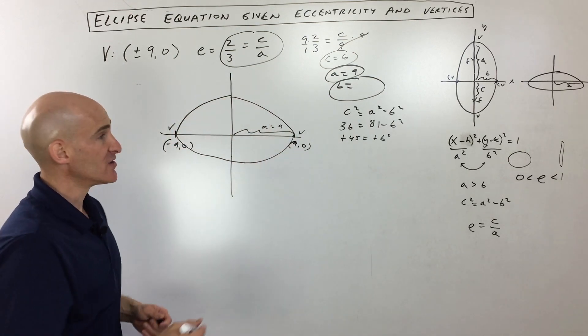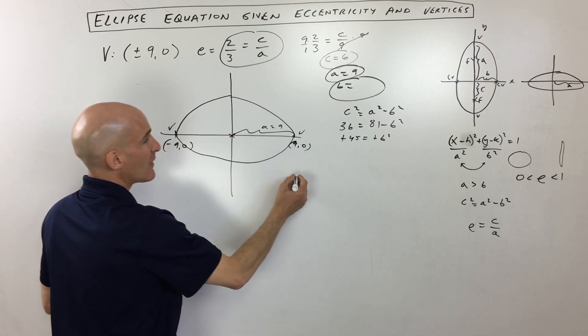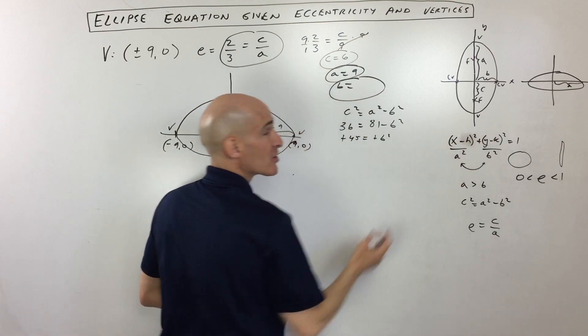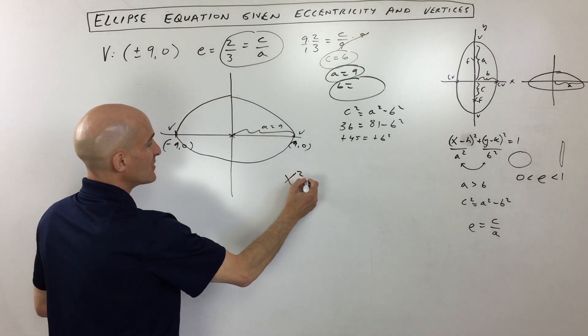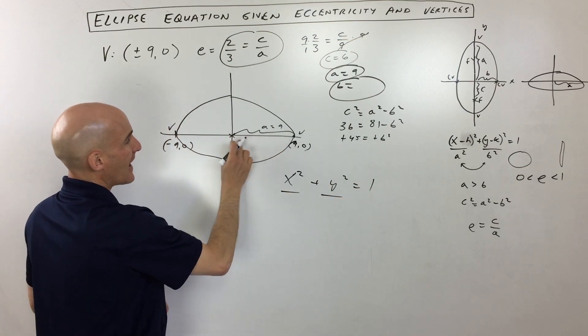But we're really after the equation in this problem. So let's take a look. It's centered right at the origin, so we don't have to worry about the h and the k—h and k are going to be zero. This equation is going to be x squared plus y squared equals one.